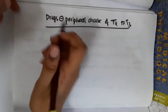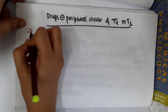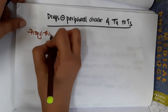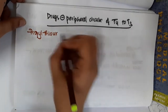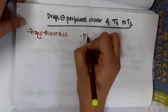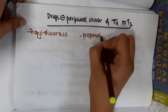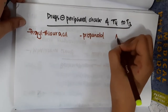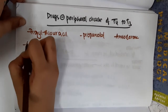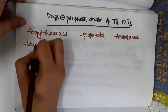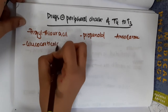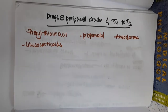The drugs which inhibit peripheral conversion of T4 to T3 are: propylthiouracil, propranolol, amiodarone, and glucocorticoids. So these are the drugs which inhibit peripheral conversion of T4 to T3.